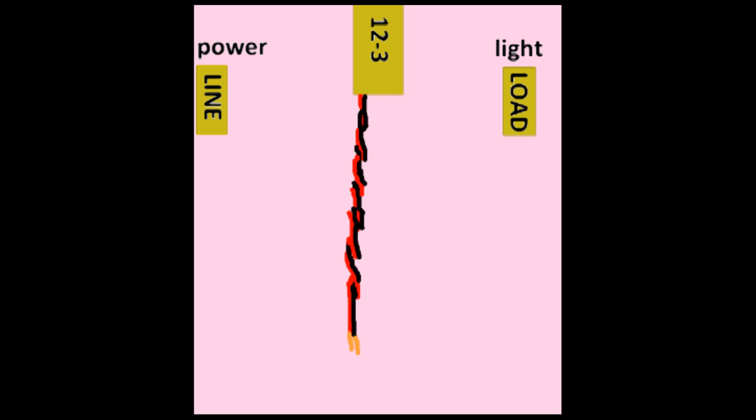Now for starters you twist the red and black wires together that come out of the 12-3. The next step in the procedure is that you wire nut the neutrals of the line and the load together.